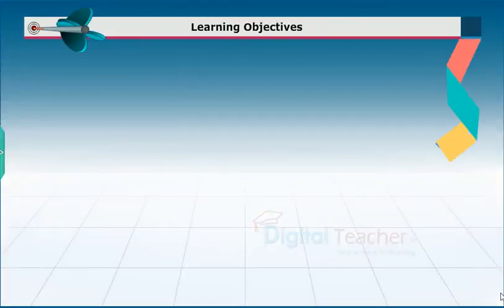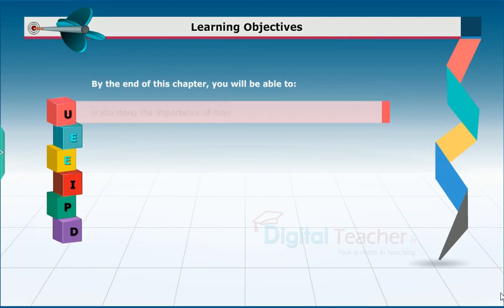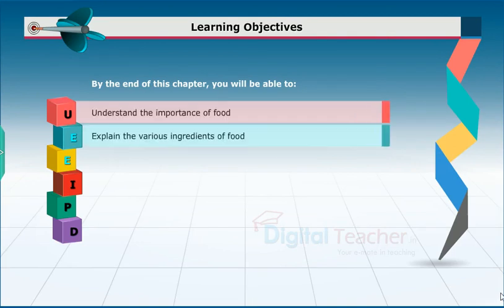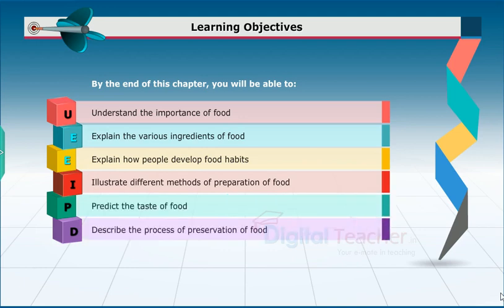Learning Objectives: By the end of this chapter, you will be able to understand the importance of food, explain the various ingredients of food, explain how people develop food habits, illustrate different methods of preparation of food, predict the taste of food, and describe the process of preservation of food.